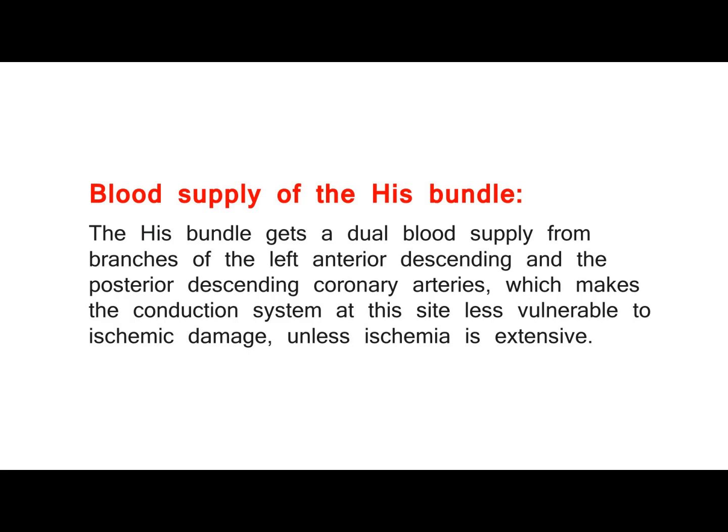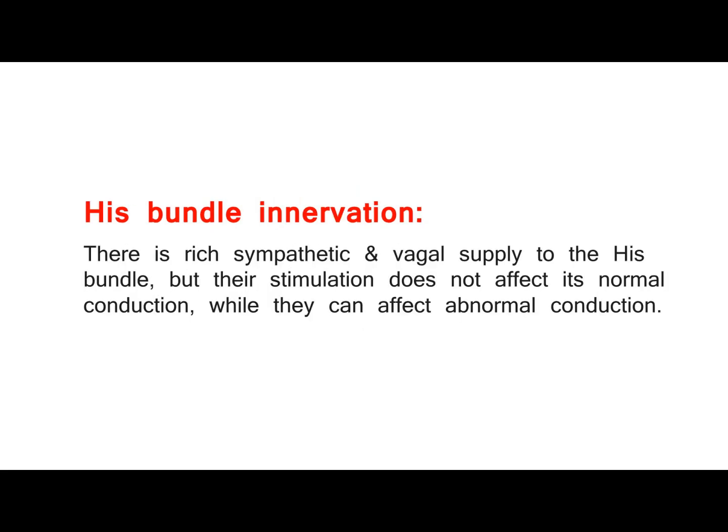Blood Supply of the HIS Bundle: The HIS Bundle gets a dual blood supply from branches of the left anterior descending and the posterior descending coronary arteries, which makes the conduction system at this site less vulnerable to ischemic damage unless ischemia is extensive. There is rich sympathetic and vagal supply to the HIS Bundle, but their stimulation does not affect its normal conduction, while they can affect abnormal conduction.